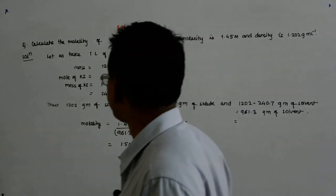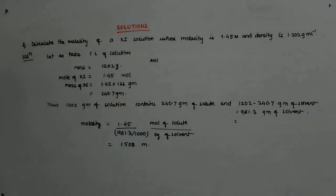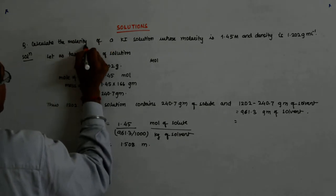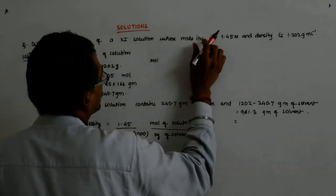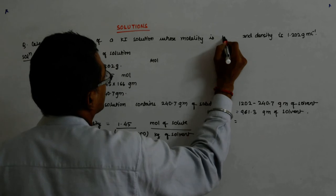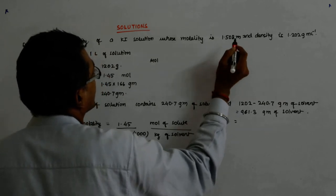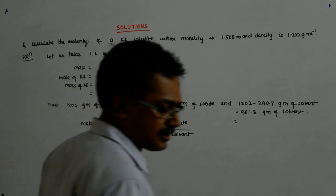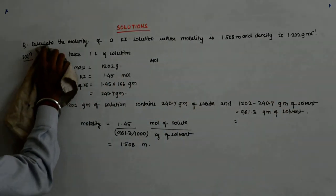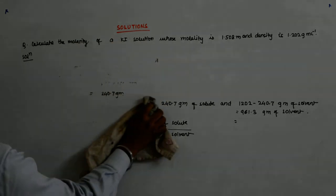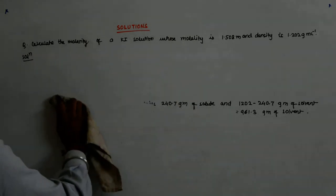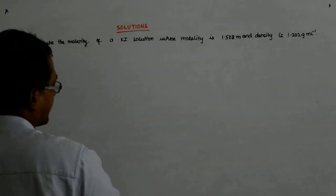Now, there could be a reverse one. This draws from the earlier question, right? That we have done already. Now, what I ask you to do is find out the molarity of a KI solution whose molality is 1.508 m and density is so much. Then, you should be getting the answer as 1.45. Let us see whether we get it. Let us try to find out the molarity and check whether we get it as 1.45.